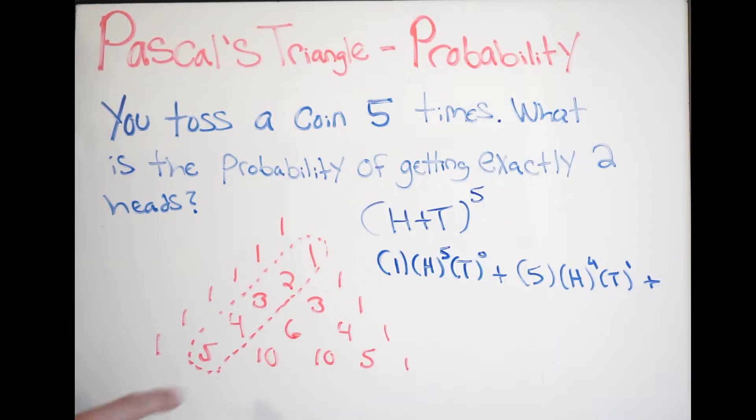So, again, just continuing on and go to my next coefficient, which is 10. So, 10, and then H to the third, T to the second, plus going on to my next coefficient, which is 10.